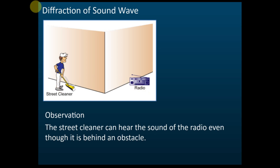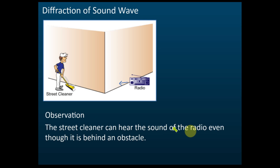We know that a wave will travel in a straight line, but when it travels in a straight line it is blocked by the building and reflected back. So the street cleaner shouldn't hear the sound of the radio — but in real life, we know that the street cleaner can hear the sound of the radio, even though it is behind an obstacle.